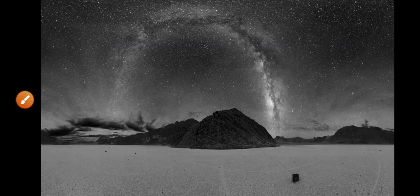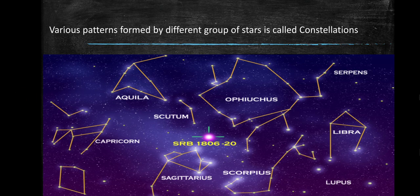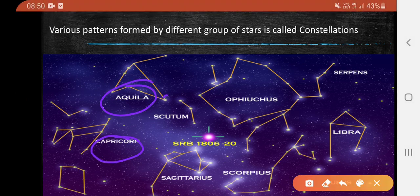This is a picture of the night sky. Various patterns formed by different groups of stars are called constellations. Examples include Aquila and Capricorn. These are stars and together they are known as a constellation.